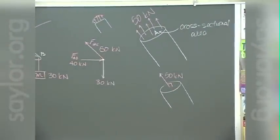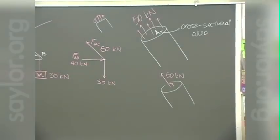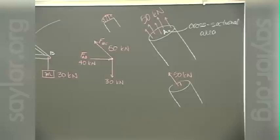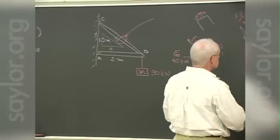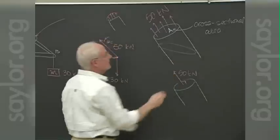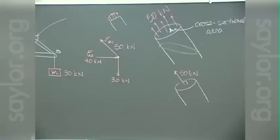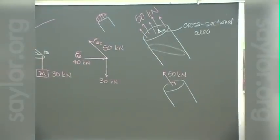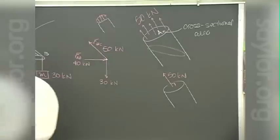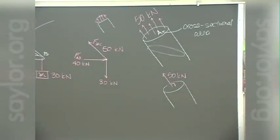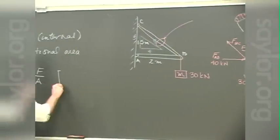The word 'normal' here means perpendicular — the force we're concerned with is perpendicular to the area. That's the case we have here. This also means we can take areas that aren't normal to the axial direction, cut them at an angle, and find those forces too. This is very important because when materials fail, they often fail at an angle rather than in a clean cut perpendicular to the axis.